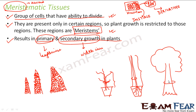Inside meristematic tissues there are many different types, which we will discuss later. As for the derivatives thrown away from the meristem — as they mature, their characteristics change and they become permanent tissue. So meristematic tissues have the ability to divide, whereas permanent tissues do not have the ability to divide. Derivatives gradually become permanent tissue as they mature.